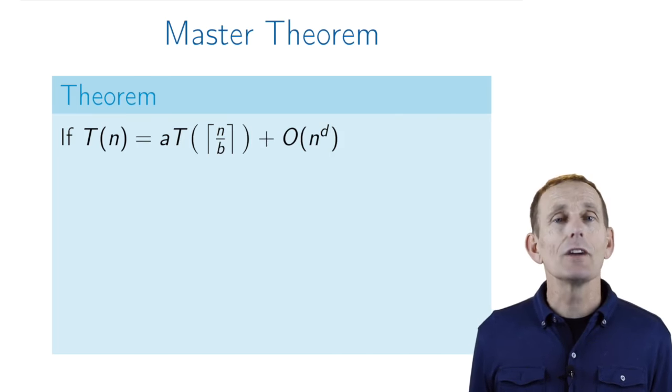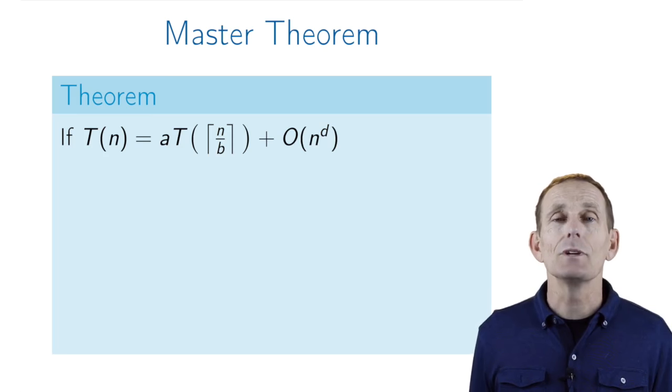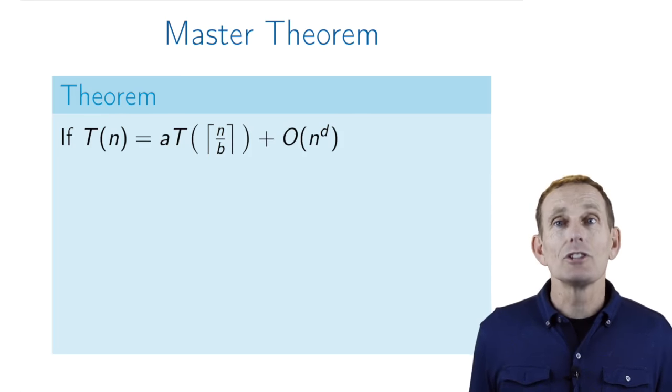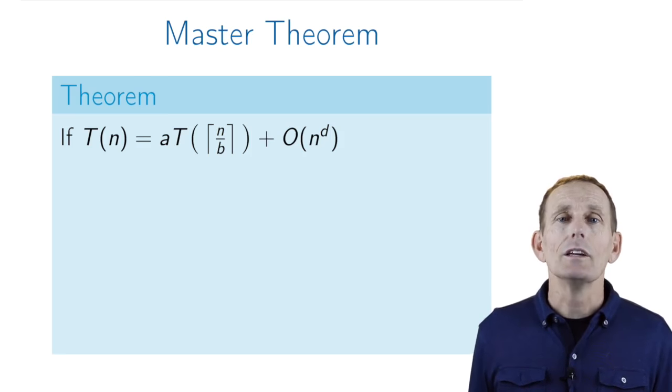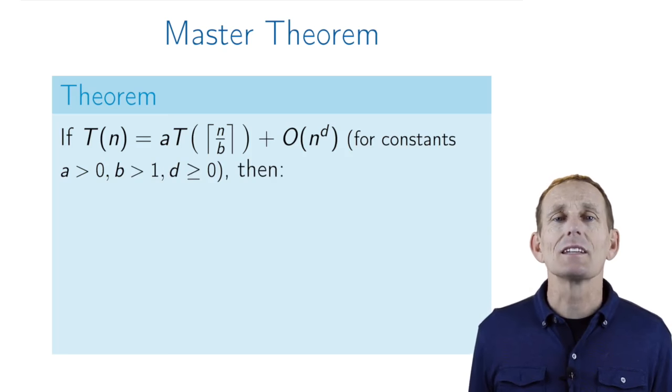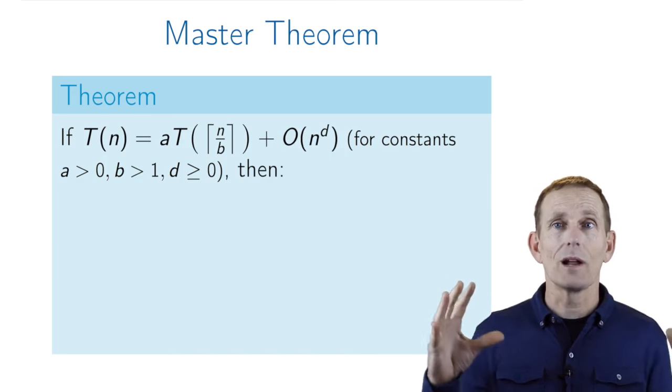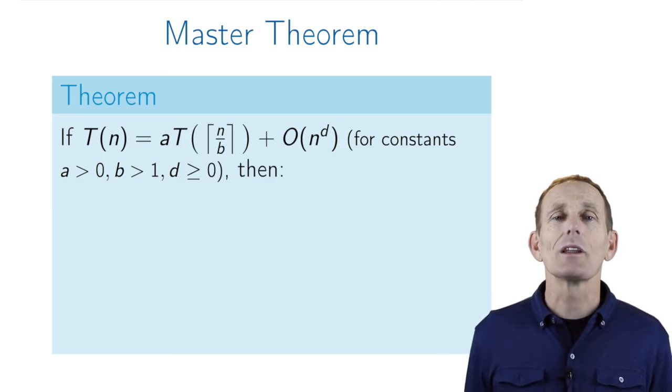So the Master Theorem says, if you have a recurrence relation T(n) equals a, some constant, times T of the ceiling of n divided by b, plus a polynomial in n with degree d. And that ceiling, by the way, could just as well be a floor or not be there at all if n were a power of b. In any case, the a is a constant greater than zero, b is greater than one, because we want to actually make sure the problem size gets smaller, and d is greater than or equal to zero.